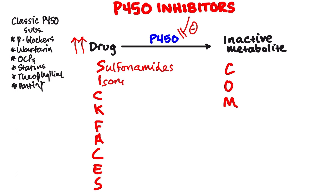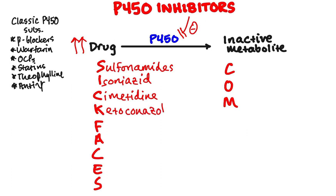I for isoniazid, which is typically given for tuberculosis. C for cimetidine — this is an antihistamine given as an antacid, as an acid reducer, and it is over-the-counter. K for ketoconazole, an antifungal, and a related drug fluconazole — both of those are antifungals.